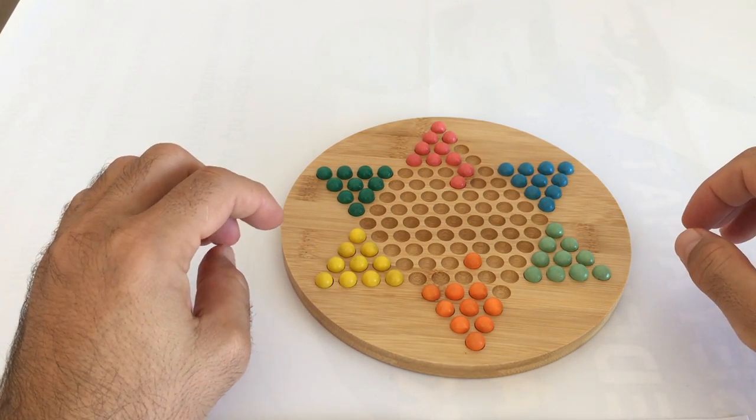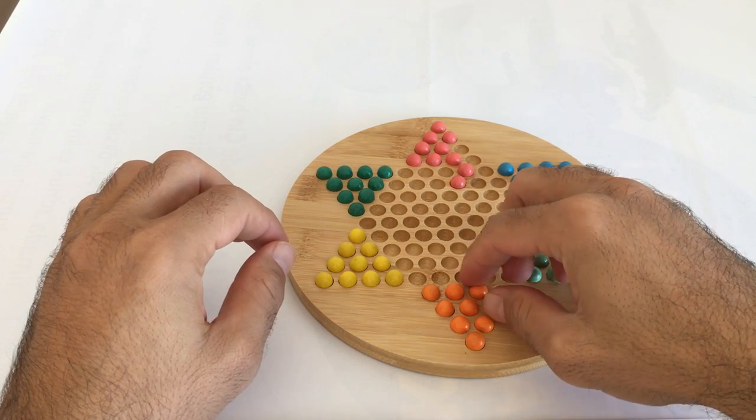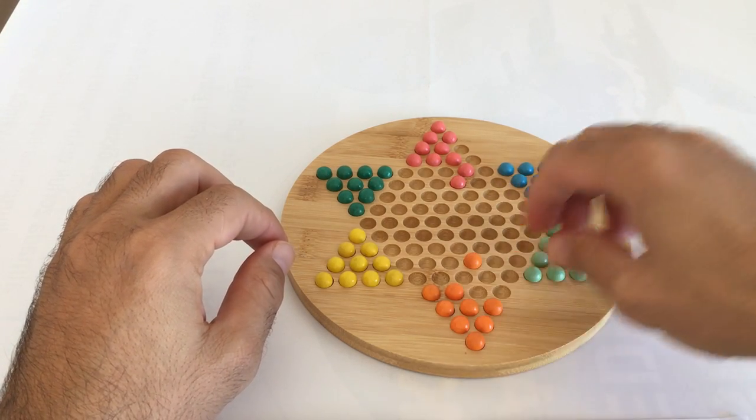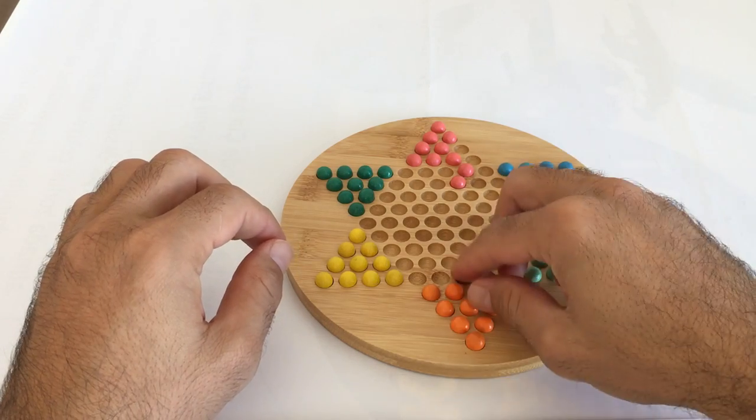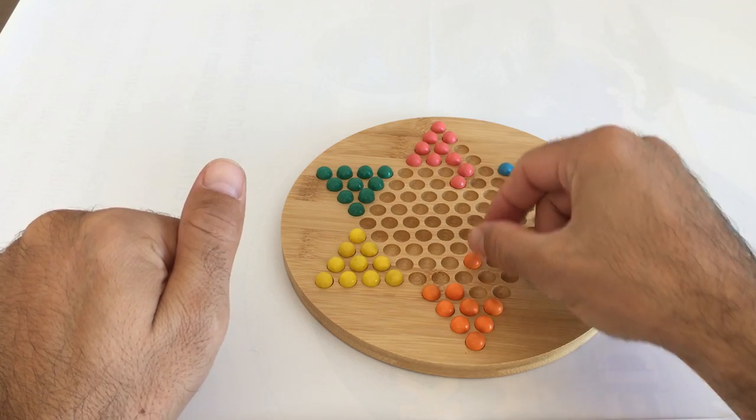But, as in classical checkers, you have to move one by one and you can jump if there is a ball in front of you. If it is your turn, you can jump like that.